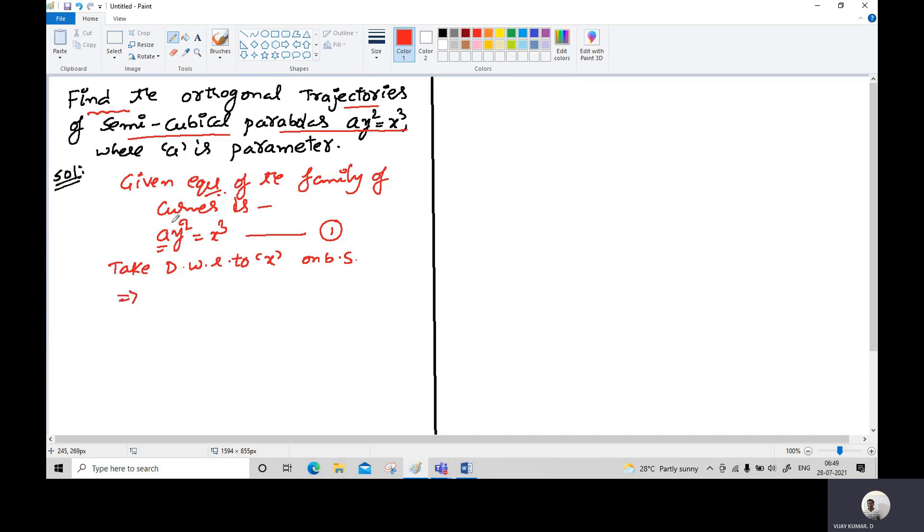So a is the constant term. Differentiation of y² with respect to x is 2y, that is why I will write 2ay·dy/dx, or you can use the notation y' as you wish. And on the right hand side, the derivative of x³ is 3x².